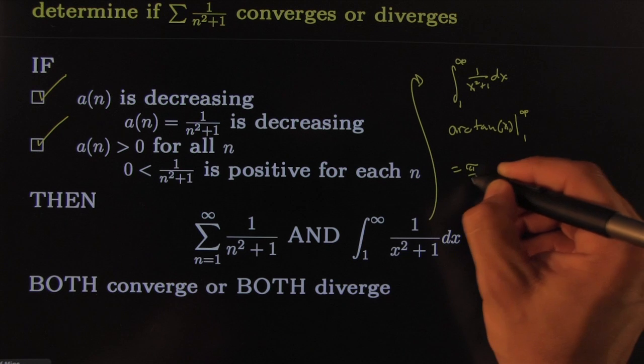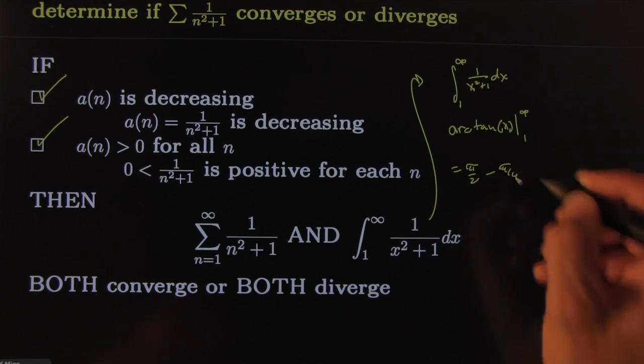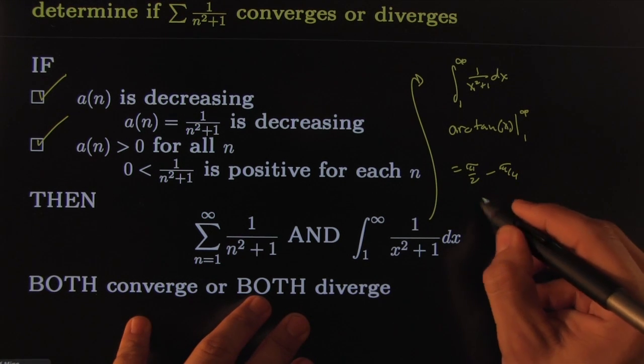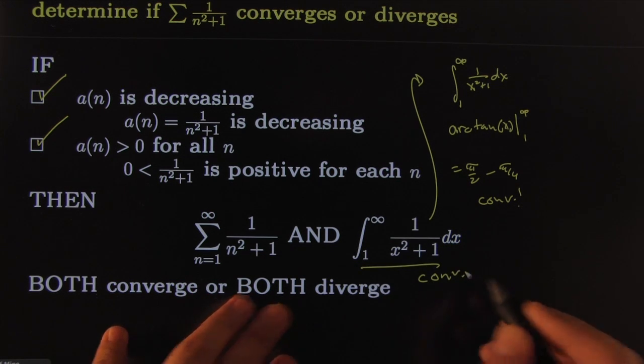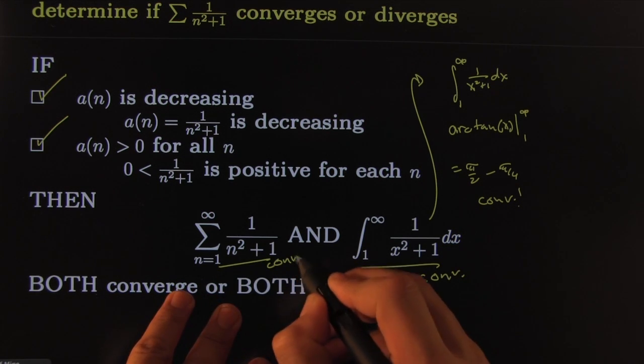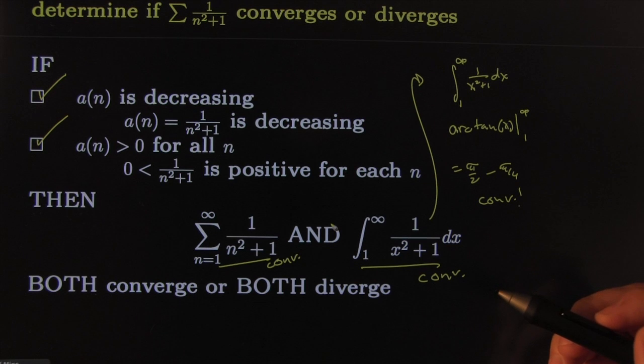Which is equal to pi over two minus pi over four. All right, that's finite - it converges. So this integral converges. Therefore, we can conclude that this series converges by the integral test.